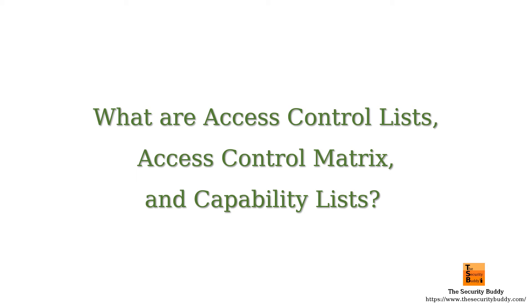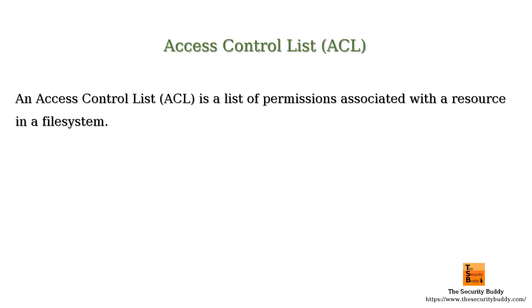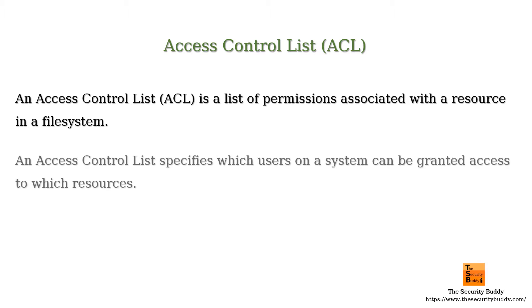What are access control lists, access control matrix, and capability lists? In this video we will try to understand that. An access control list is a list of permissions associated with a resource. In a file system based on an access control list, a user is granted permission to access the resource.